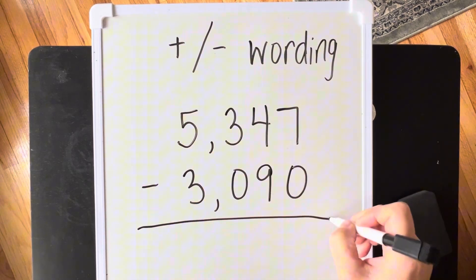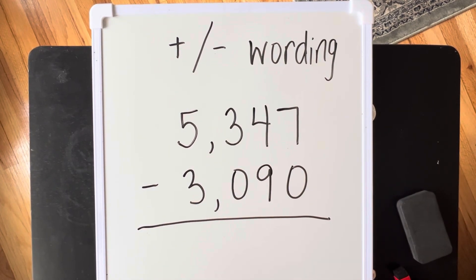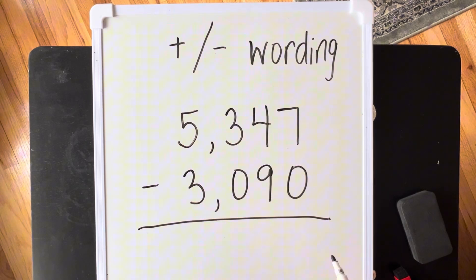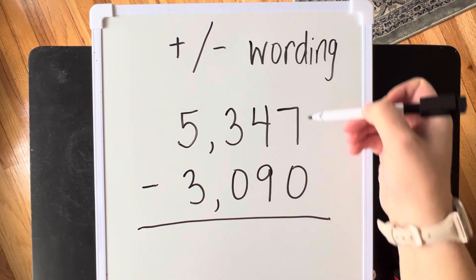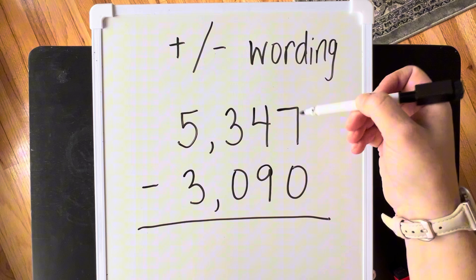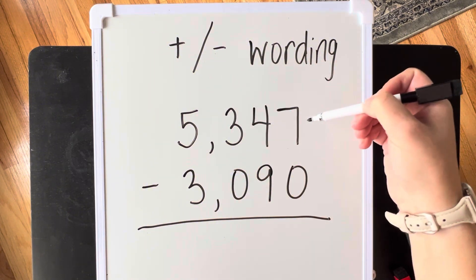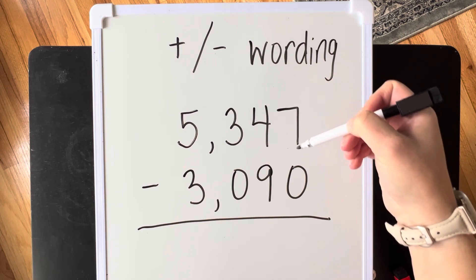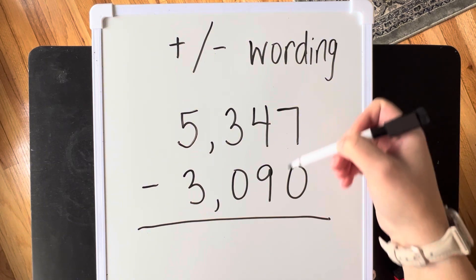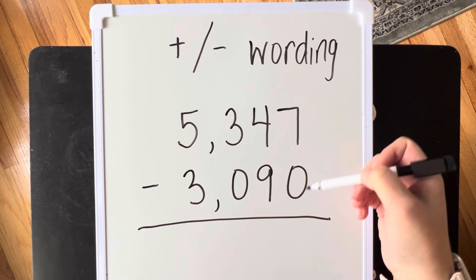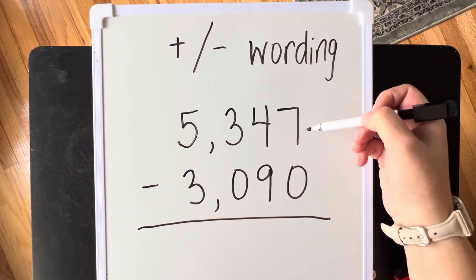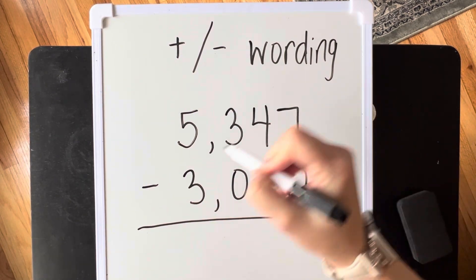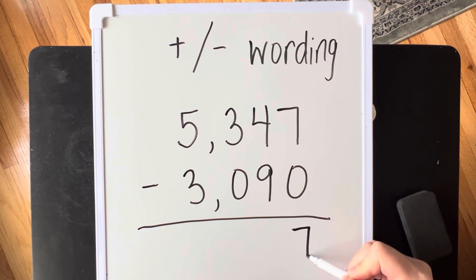If we have 5,347 minus 3,090, we are still going to start in our ones place. And we're going to make sure each time we move place value that we are allowed to do the subtraction. If your top number is not the bigger number, you cannot subtract something small from something big. So we would have to change it. 7 minus nothing is 7.